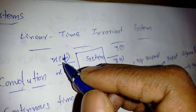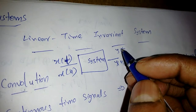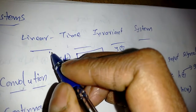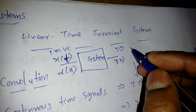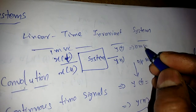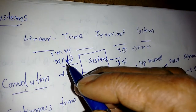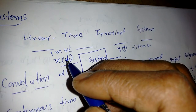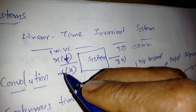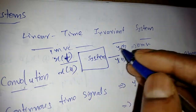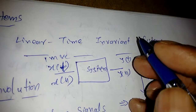Now what is time-invariant? Whenever the time of the input changes, the output should also change at that same time. For example, if X of T is changing at one millisecond but Y of T is responding at 10 milliseconds, that is not a good system. Whenever there is a delay at the input, the same delay should be at the output. That is the meaning of time-invariant.